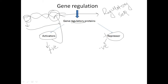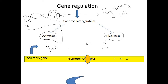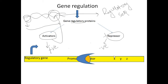Here we can see a DNA in which there is a regulatory gene, a promoter, an operator, and XYZ genes, all lying under the same promoter — which is typical in prokaryotes. The regulatory gene codes for a protein that goes and binds at the regulatory sequence such as the operator region, and as a result RNA polymerase has no access to transcribe the gene. This protein acts as a repressor, and this is negative regulation.